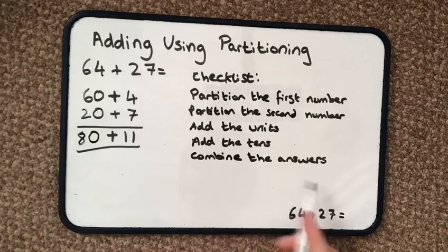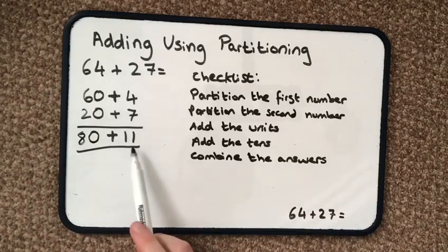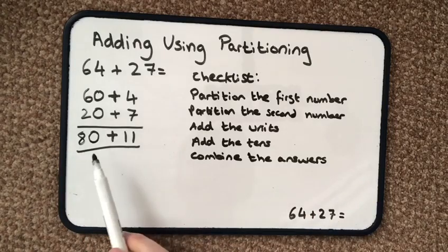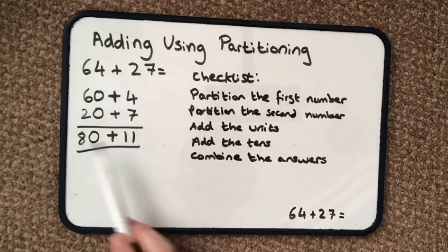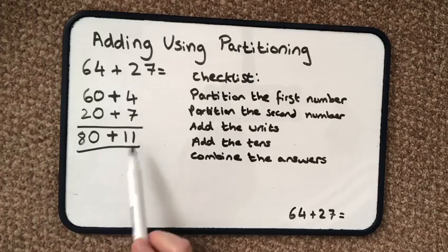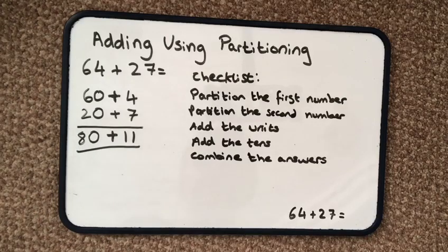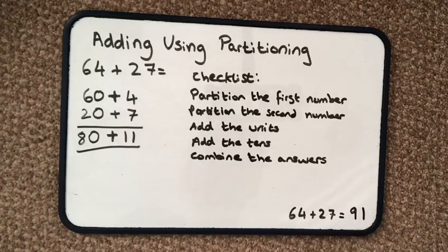Then it says combine the answers, so 80 plus 11. I do the tens first — I've got 90 tens and one unit, so it's going to be 91. And that's the answer.